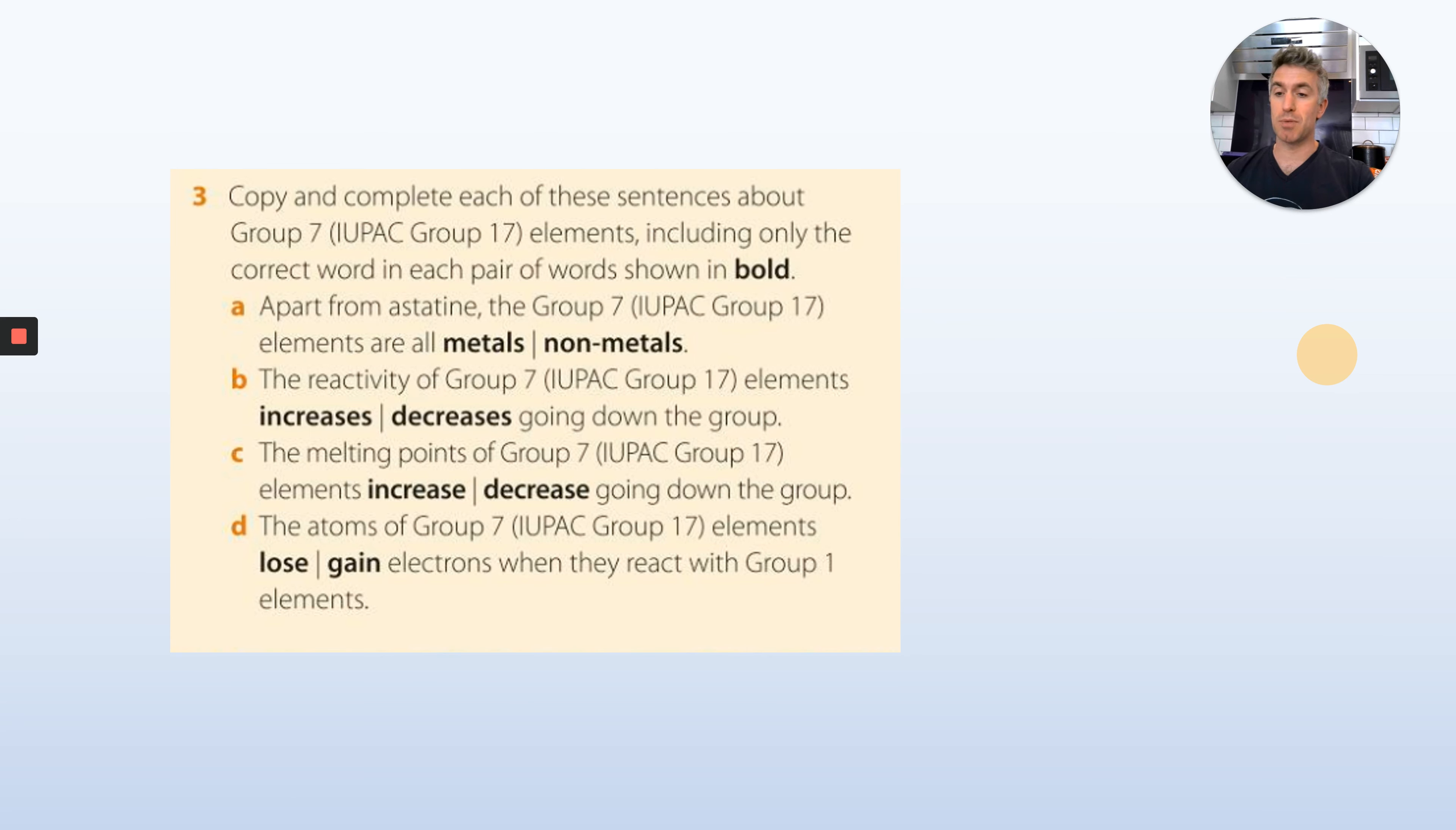Exactly the same as number one. Copy and complete the sentences. The Group 7 metal elements, including only the correct word. Apart from astatine, the Group 7 metals are all metals or non-metals. The reactivity of Group 7 elements, does it increase or decrease going down the group? The melting point in Group 7 increases or decreases. The atoms in Group 7 lose electrons or gain electrons when they react. You just write 3A then the correct word, 3B then the correct word, 3C, 3D.